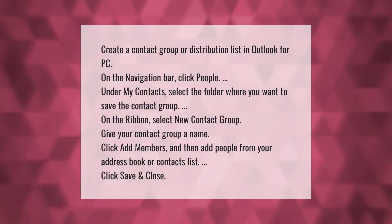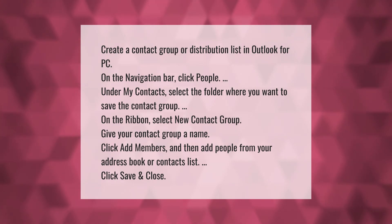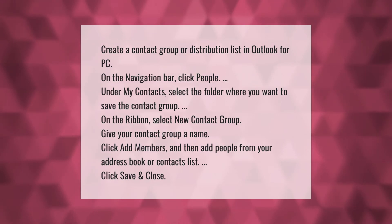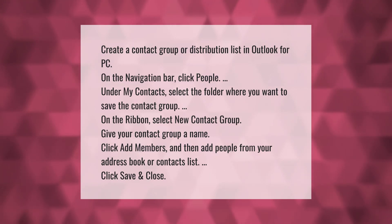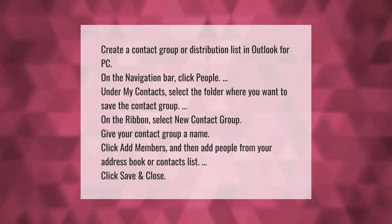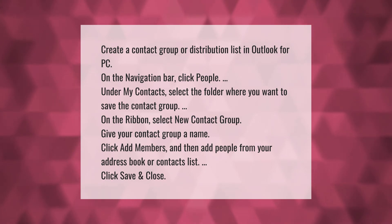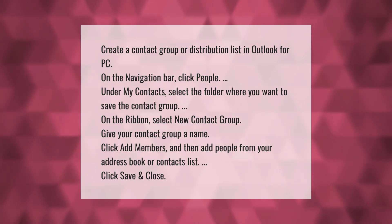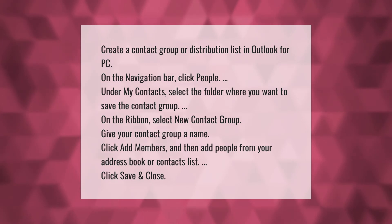Create a contact group or distribution list in Outlook for PC. On the navigation bar, click People. Under My Contacts, select the folder where you want to save the contact group. On the ribbon, select New Contact Group, give your contact group a name, click Add Members, then add people from your address book or contacts list. Click Save and Close.